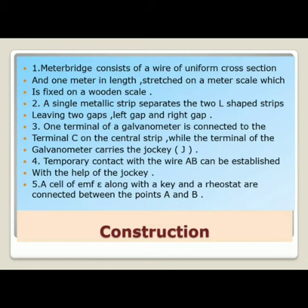There is a jockey J connected to the galvanometer, while the other terminal is attached to the central strip. Temporary contact with wire AB can be established with the help of the jockey. The meter bridge has a uniform cross-section 1-meter wire placed on a meter scale fixed on a wooden scale. A cell of EMF E along with a key and a rheostat are connected between points A and B.